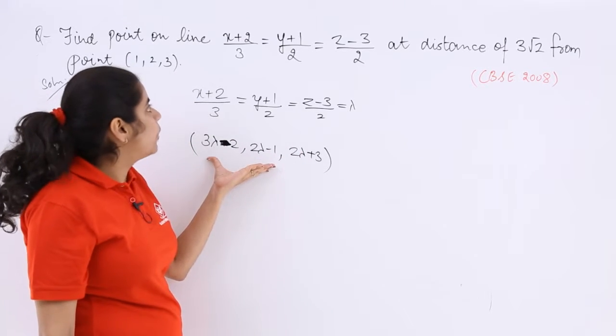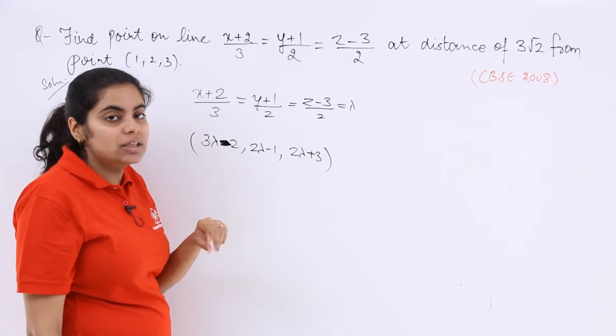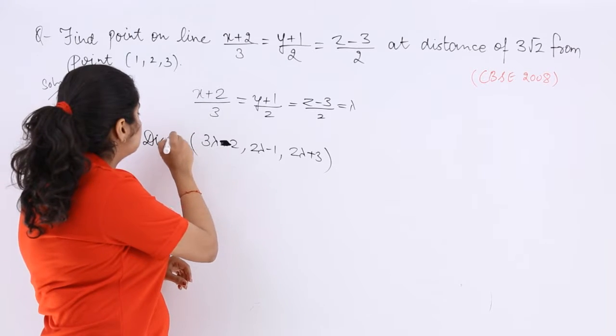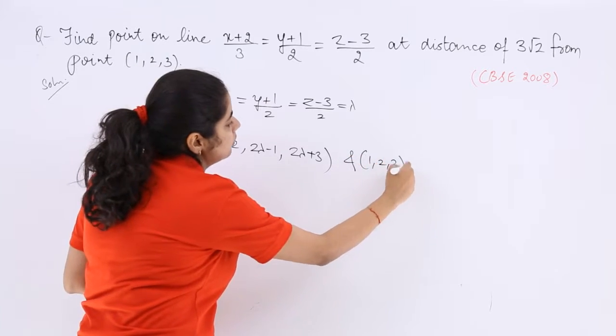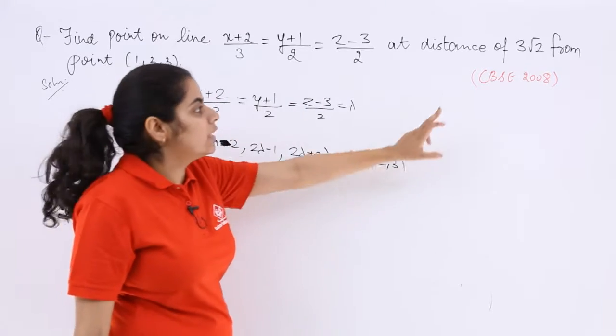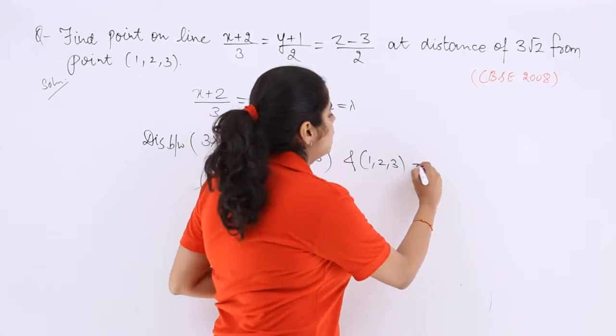So if this is one point, 1, 2, 3 is the other, what is the distance between this point and 1, 2, 3? So distance between this point and 1, 2, 3 is given to you as 3 root 2.